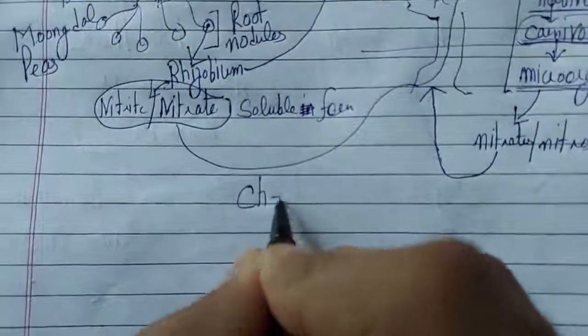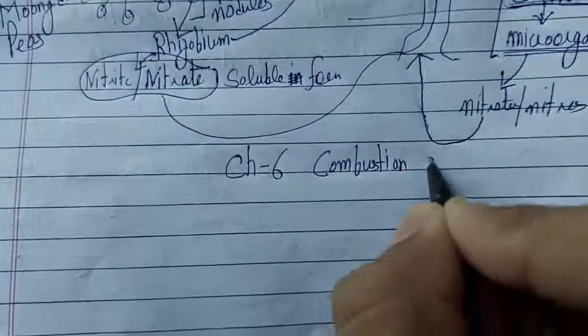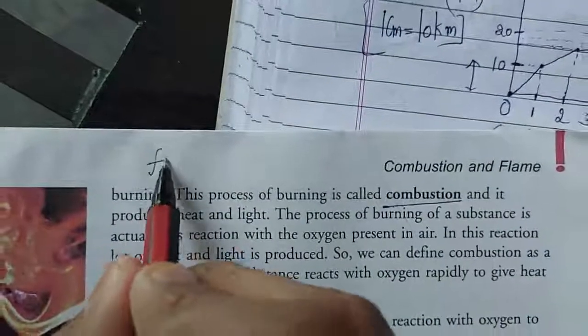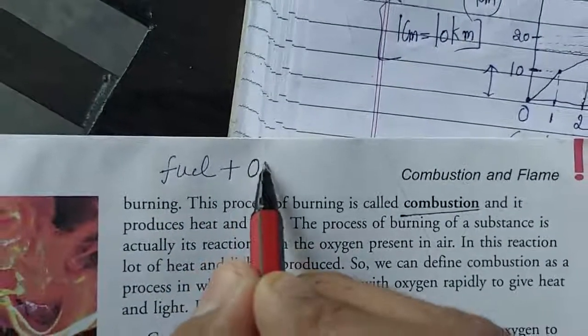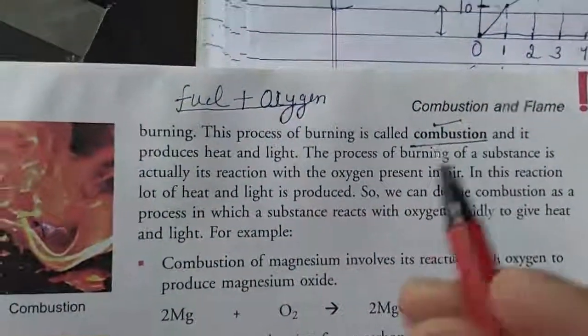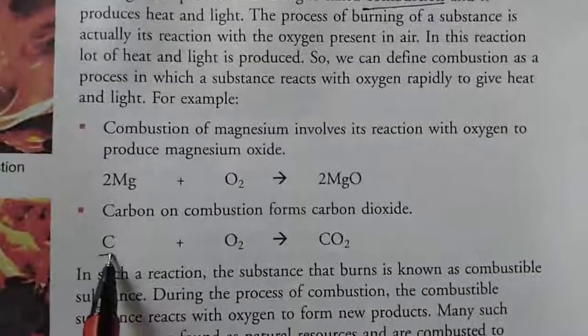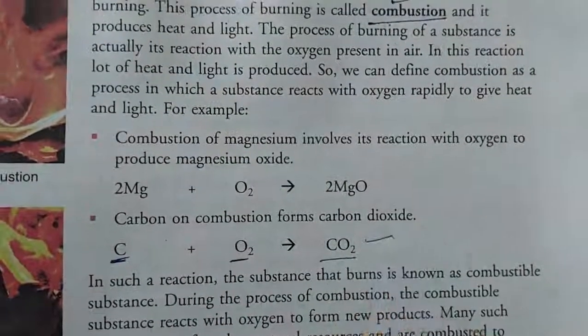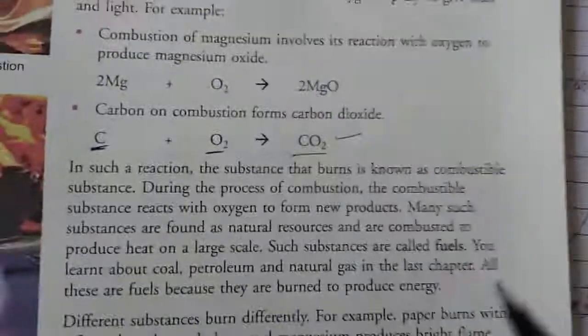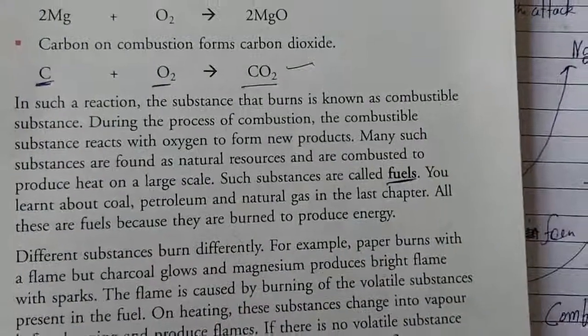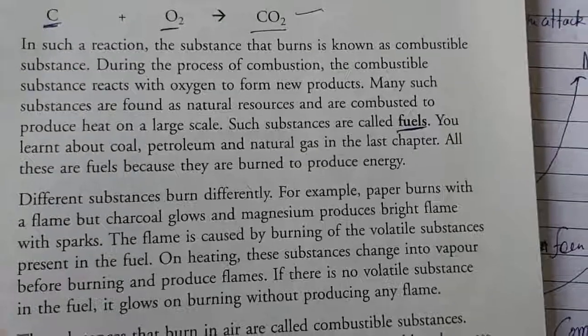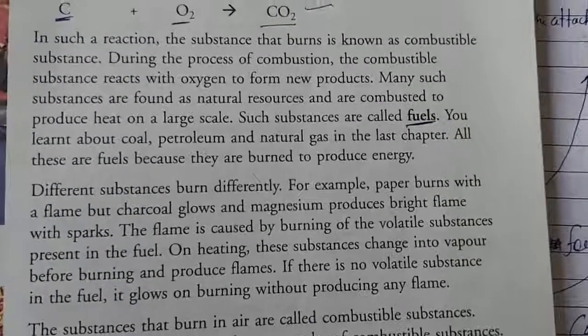The next chapter is combustion and flame. First of all, you should know the meaning of combustion. Combustion mainly means when a fuel burns in the presence of air and oxygen. Suppose wood is burning in the presence of oxygen — that is combustion. For combustion, fuel must be there, oxygen must be there, and a proper temperature should be there. For example, carbon present in wood burns in the presence of oxygen and carbon dioxide gas is released. The substance which is burning is known as fuel.